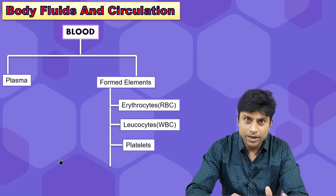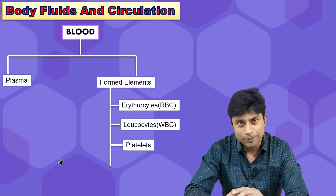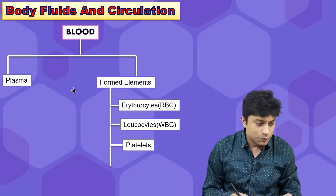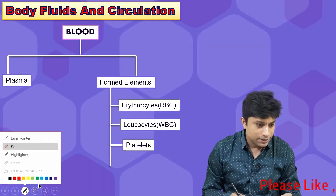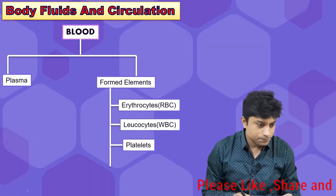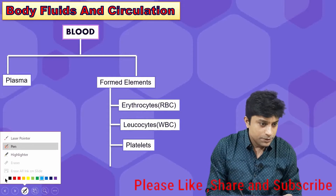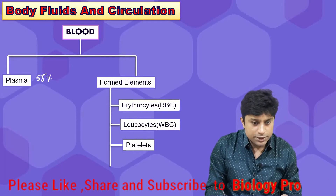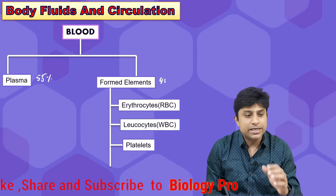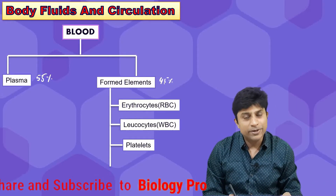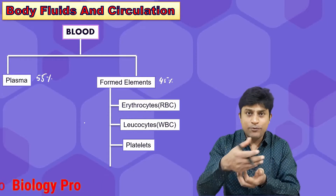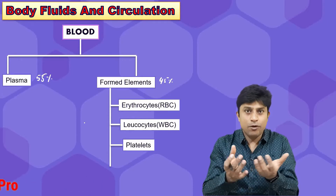The two components are the matrix of the blood as well as the cells present in the blood. The matrix of the blood is called plasma. In the blood, the amount of plasma is around 55 percent, and the remaining 45 percent of the blood consists of cells called formed elements.